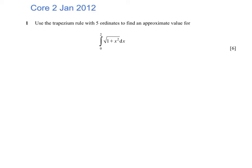Core 2, January 2012. I want to go from 0 to 2, and I need 5 ordinates.